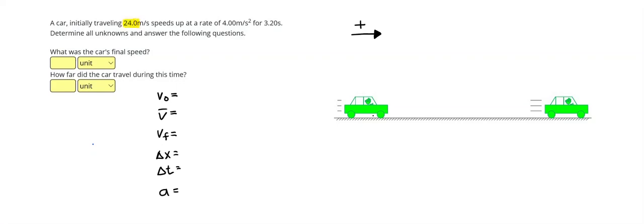A car initially traveling 24.0 meters per second speeds up at a rate of 4.00 meters per second squared for 3.2 seconds.